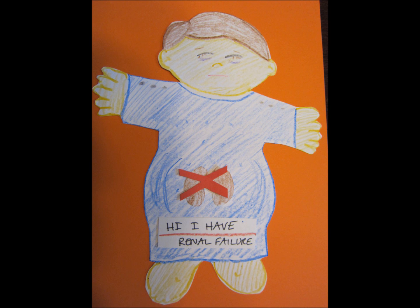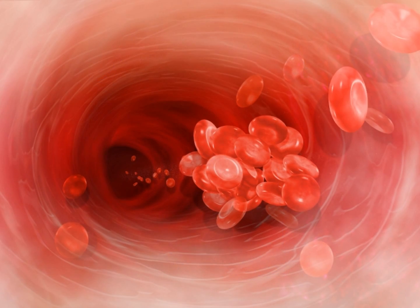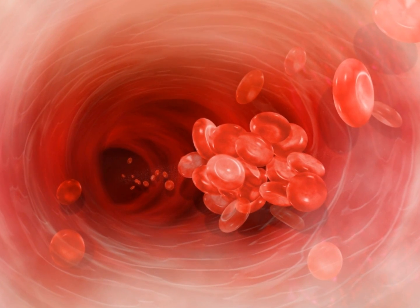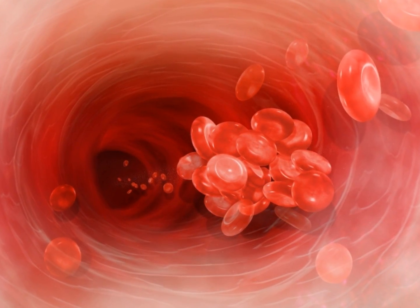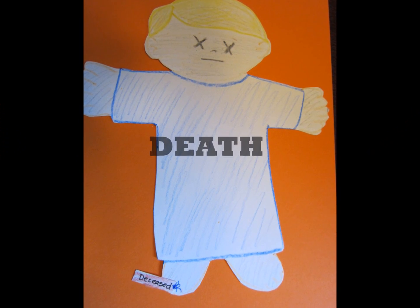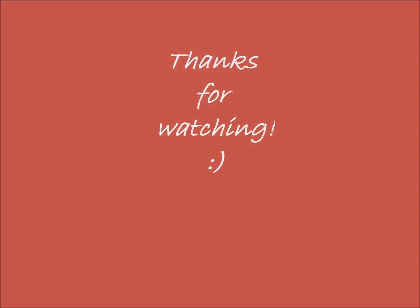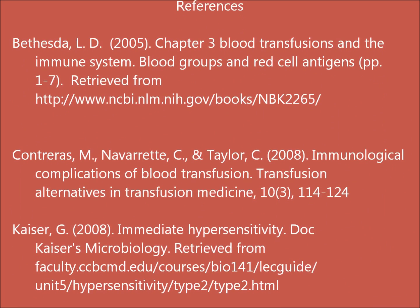As the red blood cells die, hemoglobin is released. This leads to several serious consequences: renal failure due to excessive hemoglobin damaging the kidneys; anemia due to a decrease in oxygen-carrying red blood cells; ischemia due to the clotting of blood cells forming obstructions in the vessels, cutting off blood flow and oxygen from reaching the vital organs or tissues; and finally, death.